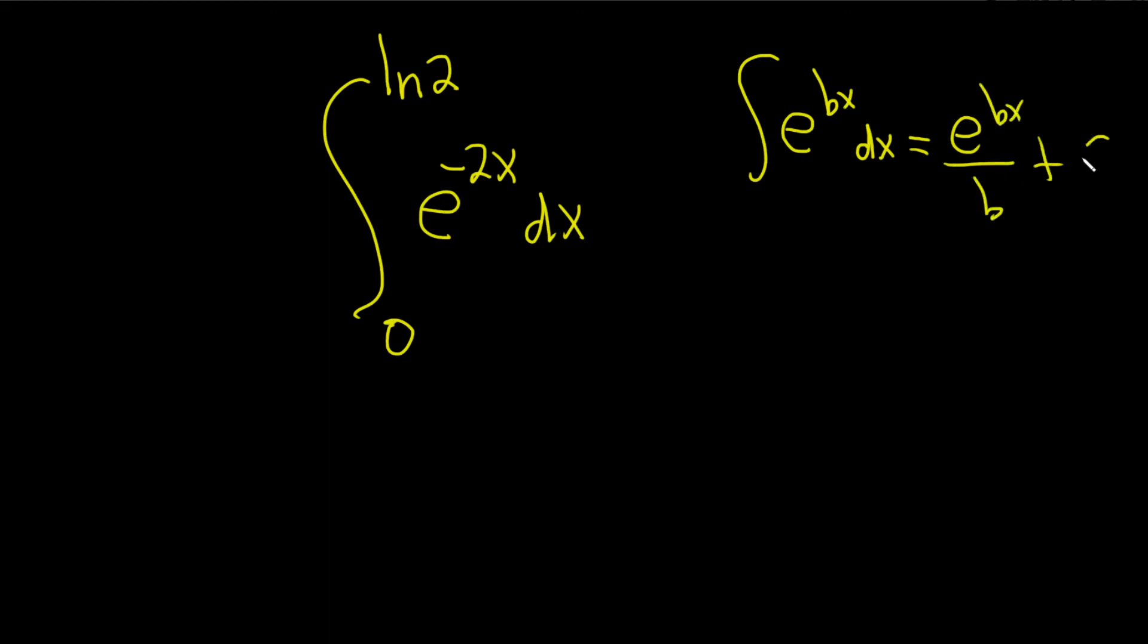That's the formula, so you just divide by the number. So here, b is negative 2, so we just divide by negative 2. This will be e to the negative 2x over negative 2. Except this is a definite integral, so we don't need to write the plus C. Instead we put a little bracket, and we have 0 and ln 2.